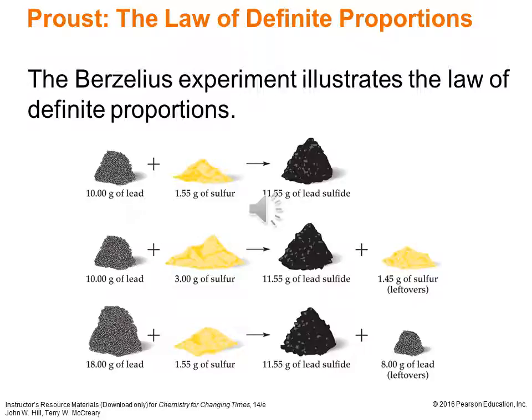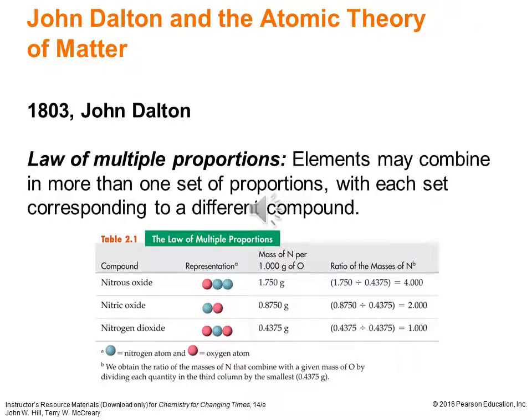On the other hand, if Berzelius increased the lead to 18 grams while keeping the same 1.55 grams of sulfur from the first experiment, he ended up with that same 11.55 grams of lead sulfide in every case, but now 8 grams of lead was left over — because that original ratio of 10 grams of lead to 1.55 grams of sulfur was exactly the right ratio to give only lead sulfide product. So we have two important laws now: the law of conservation of mass and the law of definite proportions.